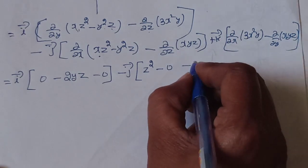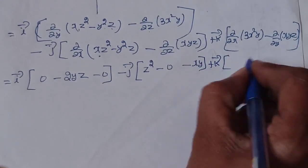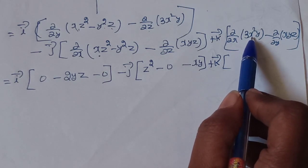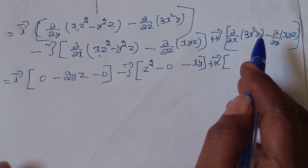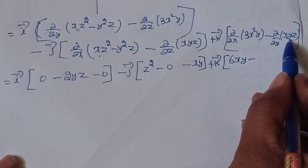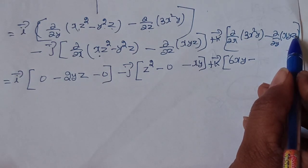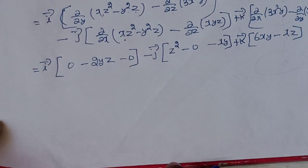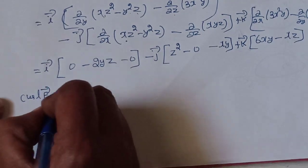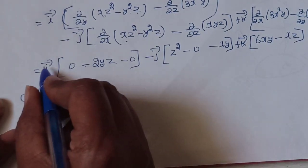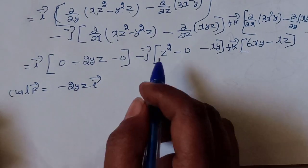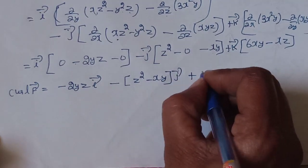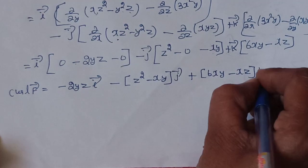Evaluating: z differentiates to 1, giving xy into 1 = xy, with a minus sign. Plus k-vector: differentiating 3x²y with respect to x, y is constant so 3y is constant, giving 6xy. Minus d/dy of xyz, with x and z constant giving xz. So xz minus xz equals 0 for the k-component. Curl F equals minus 2yz i-vector, plus xy j-vector, plus (6xy minus xz) k-vector.